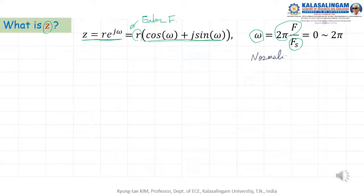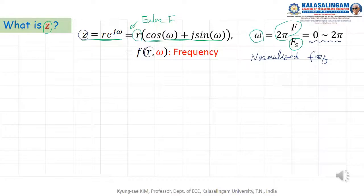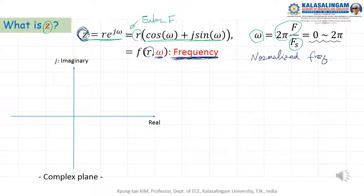The normalized frequency ranges from zero to two pi. Z is a function of R and omega, where omega means frequency. Therefore Z represents a frequency component. We sometimes call the Z domain the frequency domain — they refer to the same thing.